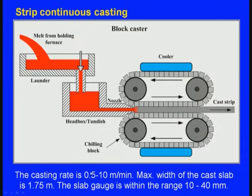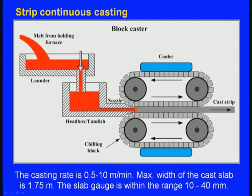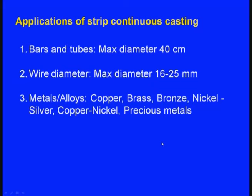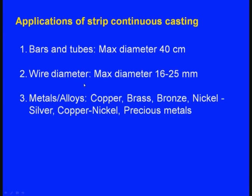The casting rate is 0.5 to 10 meters per minute. The maximum width of the cast slab is 1.175 meters. The slab gauge is within the range of 10 to 40 millimeters — this is the thickness of the strip. Applications: it is used to produce bars and tubes with maximum diameter of 40 centimeters, and wires with maximum diameter of 16 to 25 millimeters. The alloys covered include copper, brass, bronze, nickel, silver, and other precious metals.